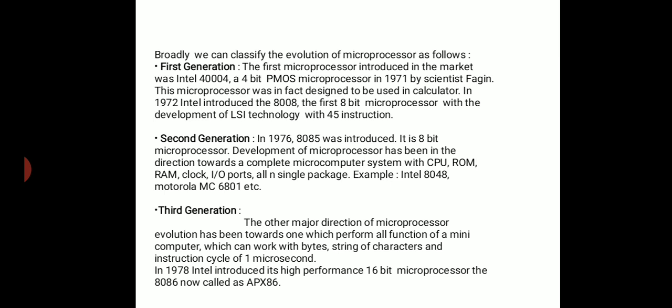So what we have studied is the evolution of microprocessor — how the transistor came, then IC, then development started, then SSI technology came, then LSI, then VLSI, and how microprocessors continued to develop. Now we will see the same content classified by generation, which is called classification of the evolution of microprocessor.